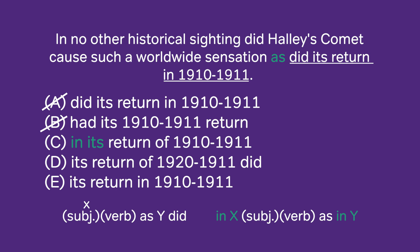Choice D, 'as its return did,' is again comparing the return to Halley's Comet itself. And choice E, 'its return,' is particularly awkward because we're comparing the action — what Halley's Comet did — to just a static noun, 'its return.' So that makes no sense whatsoever.